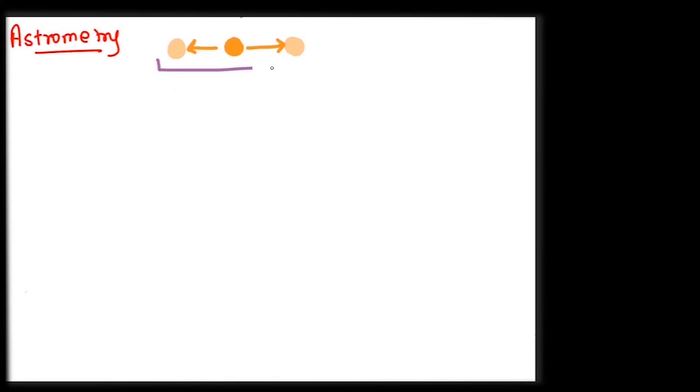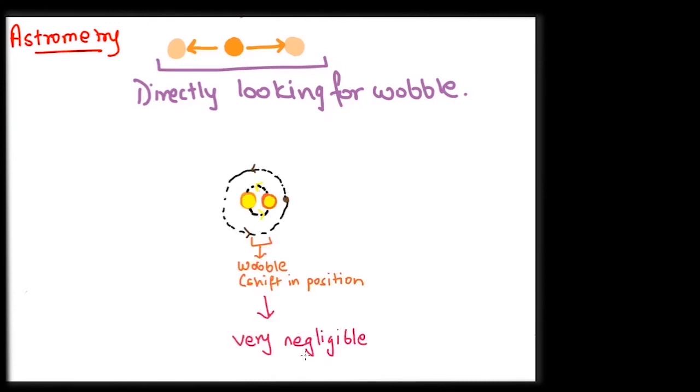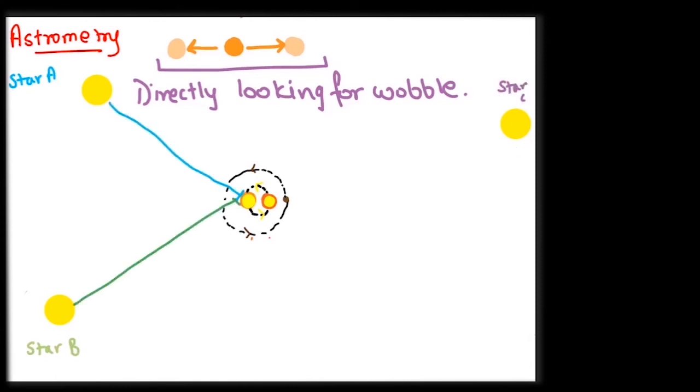This method is called astrometry and here we look directly for the wobbling of the star. As the star and planet orbit around each other's very center, the star's wobbling can be seen as a change in its position in the sky. This change is more of a to and fro about a mean point and is very very very small, almost negligible, which makes it so hard to observe.